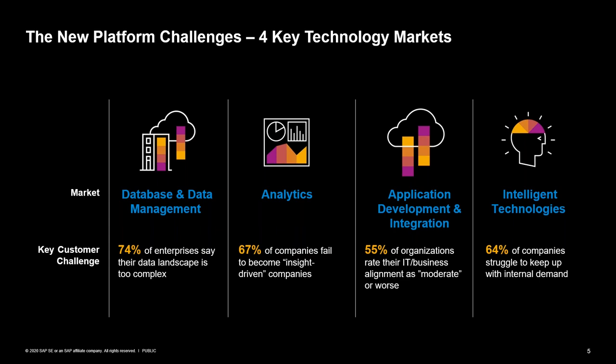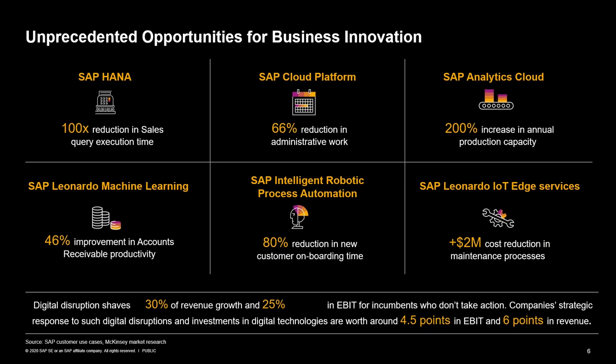SAP's positioning in these markets is crucial to understand before we look at our path forward. We are in an era where data plays a vital role in all decision-making — having the ability to manage experience data and operational data, gaining new levels of business insight, and turning them into impactful actions are absolutely key to customer success. Utilizing SAP HANA, there is a reduction of 100x in sales query execution time — similar to the story of a Web Intelligence report going from four hours to four seconds. Integrating your data strategy with your analytics strategy is more important than ever for customer success.